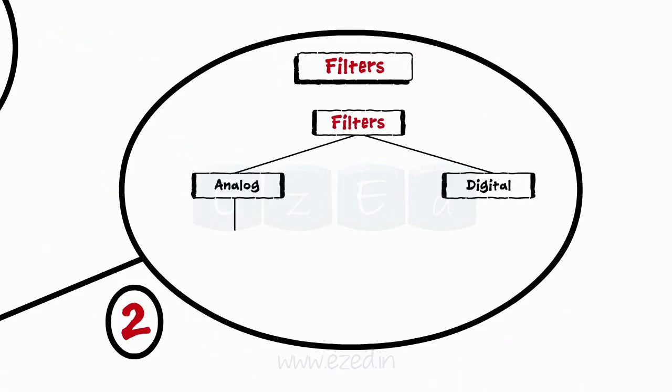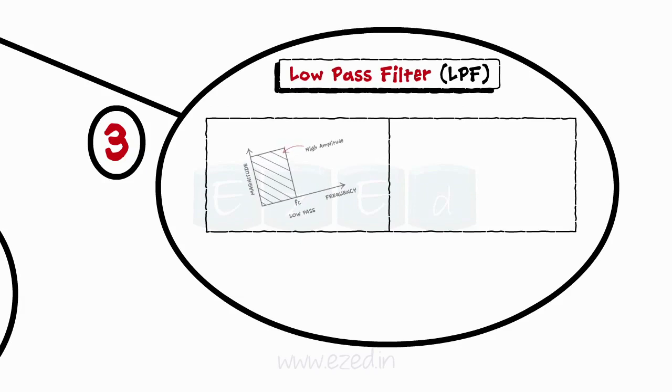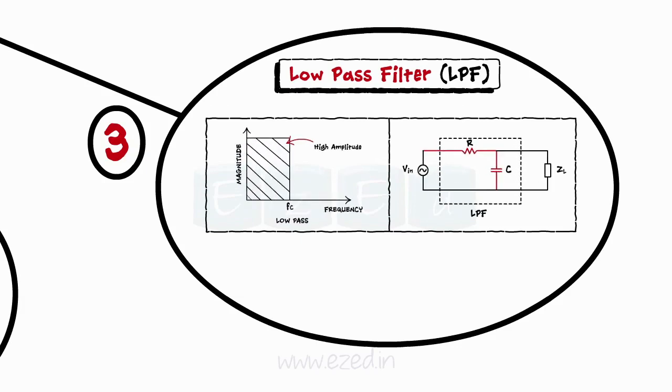Analog filters are further classified as low pass filter, high pass filter, band pass filter, and notch filter. A low pass filter passes frequencies below cutoff frequency only. A resistor in series with capacitor forms a low pass filter.